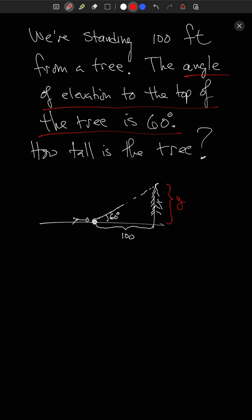The question is how tall is the tree — we need to find that height, which I'll call y. We have a right angle here, so we have a right triangle. We know one side of 100 feet and two angles: 60 degrees and 90 degrees. What we want is the opposite side, y.